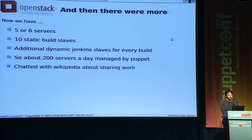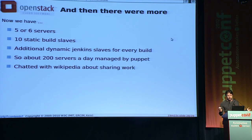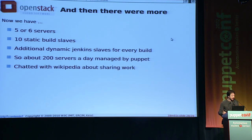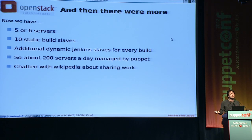We've got more and more machines — five or six servers, and 10 static Jenkins build slaves all managed by Puppet. We've also gotten to this really interesting point with DevStack, which you can use to install OpenStack on a single machine — great for integration testing. It does sort of take over the entire machine and doesn't leave it in a state you can reuse. So we have to spin up a brand new machine every time we want to run a test and then delete the machine, meaning we're spinning up and tearing down somewhere on the order of 200 to 300 machines a day.